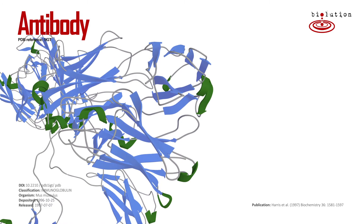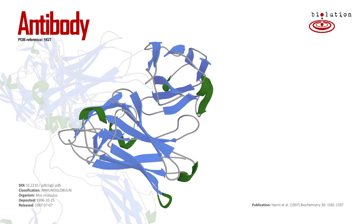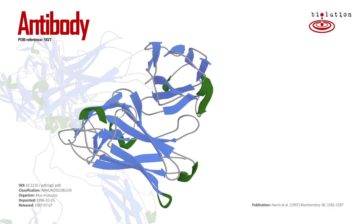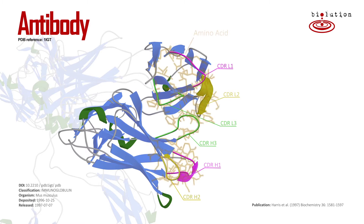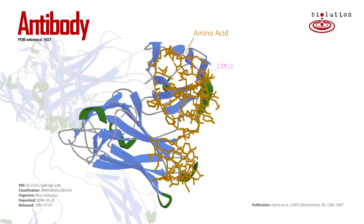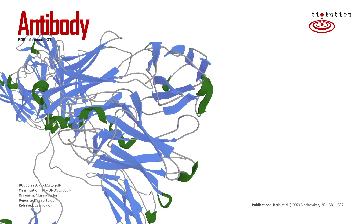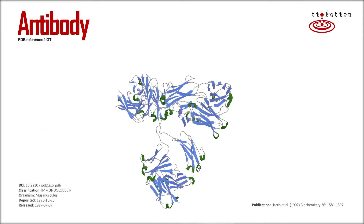Zooming in, the tip of the variable domain is formed by six loops, also referred to as the Complementarity Determining Regions, or CDR. They define the affinity for the antigen, and their amino acid sequence is different in each antibody, explaining why this domain is referred to as variable.